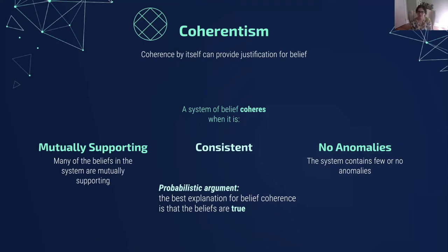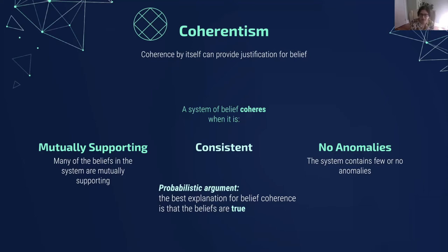Here's a probabilistic argument in favor of coherentism: the best explanation for your beliefs being coherent is that your beliefs are true. Truths in the world, if there are such truths, presumably cohere — they're consistent, they're mutually supporting, and there wouldn't be any anomalies. The external world, we assume, is consistent with itself. If there were contradictions in the way the world was, presumably the world would stop being a thing — inconsistencies would cancel itself out. So if your beliefs also cohere with each other, there's a sense in which they're similar to the way truths relate to each other. That means coherence is a good marker for truth, and knowing your beliefs are coherent gives you justification for believing they're probably true together.